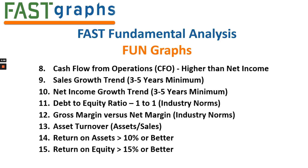I want to look at cash flow from operations higher than net income. I also want to see a sales growth trend that's generally up — the faster the better — for at least the last three to five years, but I can look back up to 20 years. I want a net income growth trend of three to five years or greater. I want a debt to equity ratio of at least one to one. On gross margin versus net margin, I want to see good gross margins and net margins. I want the company to be profitable. I also want to see asset turnover — how often they turn over their assets through their sales. I want return on assets greater than 10% and return on equity of 15% or better.